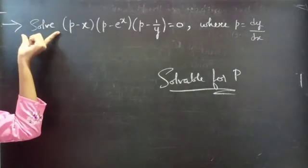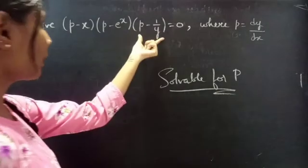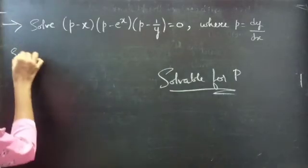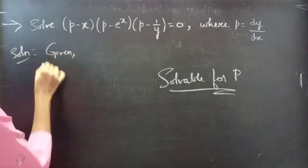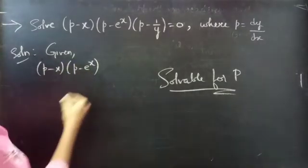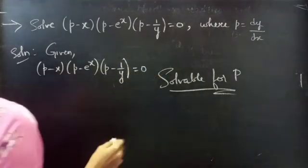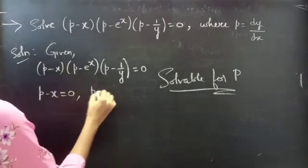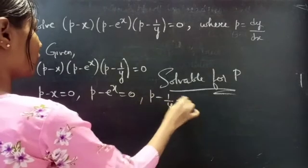Solve the given problem: P minus X, into P minus e power X, into P minus 1 by Y equals to 0, where P equals to dy by dx. The equation is P minus X into P minus e power X into P minus 1 by Y equals to 0, which gives us three factors: P minus X equals to 0, P minus e power X equals to 0, and P minus 1 by Y equals to 0.